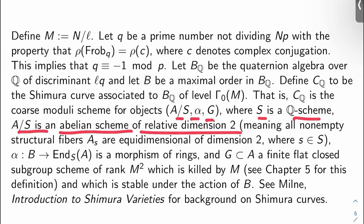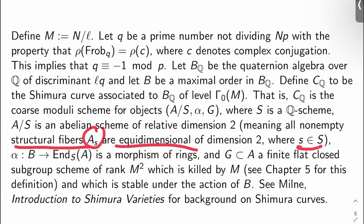Define C_q to be the Shimura curve associated to B_q of level Γ_0(M). What the heck does that mean? It's a coarse moduli scheme, so it kind of parameterizes triples (A/S, α, G), where S is a Q-scheme, A/S is an abelian scheme of relative dimension two, which means all of its non-empty structural fibers A_s for s in S are equidimensional abelian varieties of dimension two. Where α is a ring map from B to the S endomorphisms of A, and G in A is a finite flat closed subgroup scheme of rank M², which is killed by M. So that means you look at the group outputs and all the elements are killed by M. So we talked about what that means in chapter five. Okay, and then I also want G to be stable under the action of B. You can see Milne's introduction to Shimura varieties for a background on Shimura varieties and curves at large, although Ribet's paper gives you basically the references that you need to learn about the Shimura stuff that you need here.